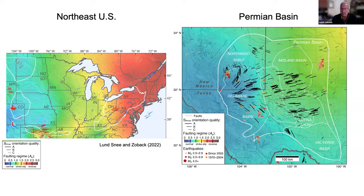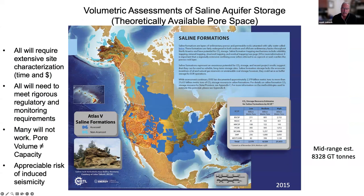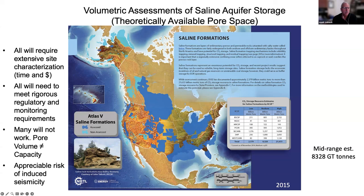This stress mapping is useful for understanding induced seismicity, as I'll demonstrate later. The Department of Energy says there's really no problem — saline aquifers have so much capacity that storing huge quantities of CO2 should be easy. The approach taken is: area × thickness × porosity = capacity pore volume. But the problem is that pore volume does not equal capacity. Each site will require extensive characterization, rigorous regulatory and monitoring requirements, and many will not work due to low permeability or other issues. There is also an appreciable risk of induced seismicity.